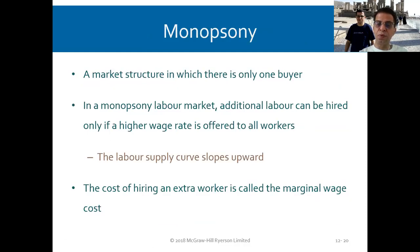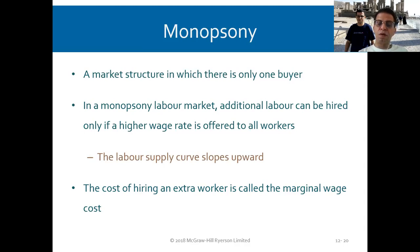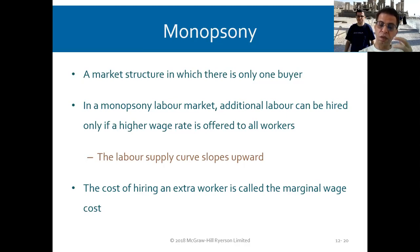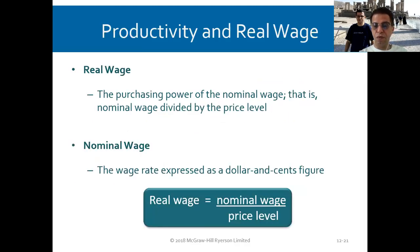In a monopsony — a market structure with only one buyer, compared to monopoly which has only one seller — additional labor can only be hired if a higher wage rate is offered to all workers. The labor supply curve slopes upward, and the cost of hiring an extra worker is called the marginal wage cost, analogous to marginal cost when producing an extra unit. So we have productivity and real wage — the real wage is the purchasing power of the nominal wage, which is the nominal wage divided by the price level.